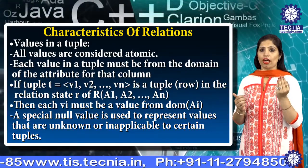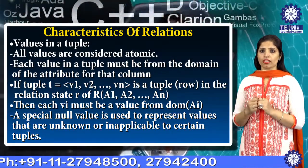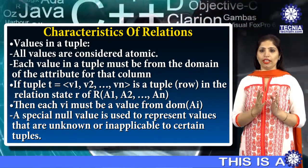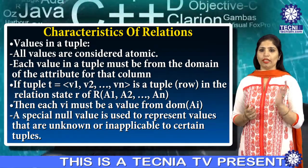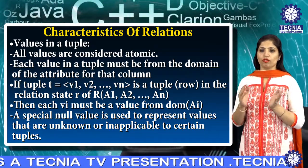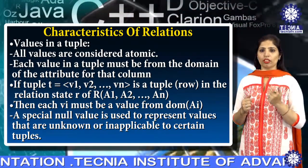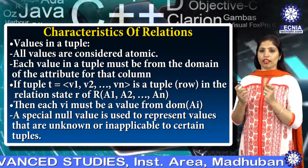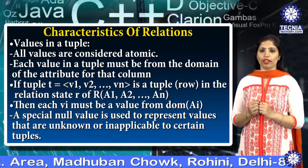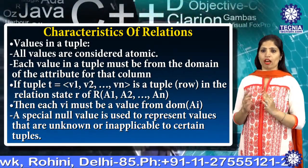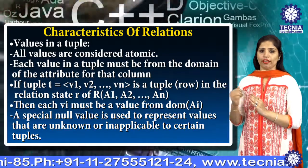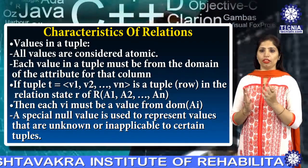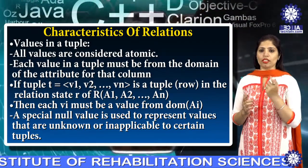The third characteristic is values in a table. All values are considered to be atomic. Each value in a tuple must be from the domain of the attribute for that column. If tuple t has values V1, V2, ..., VN in the relation state r of relation R having attributes A1, A2, A3, ..., AN, then each Vi must have a value from the domain of Ai. A special null value is used to represent values that are unknown or inapplicable to certain tuples.